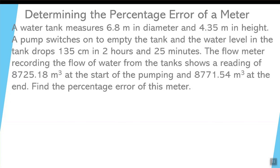Let's take a look at a sample problem. A water tank measures 6.8 meters in diameter and 4.35 meters in height. A pump switches on to empty the tank, and the water level drops 135 centimeters in 2 hours and 25 minutes. The flow meter records the flow of water from the tank and shows a reading of 8,725.18 cubic meters at the start and 8,771.54 cubic meters at the end. Find the percentage error of this meter.